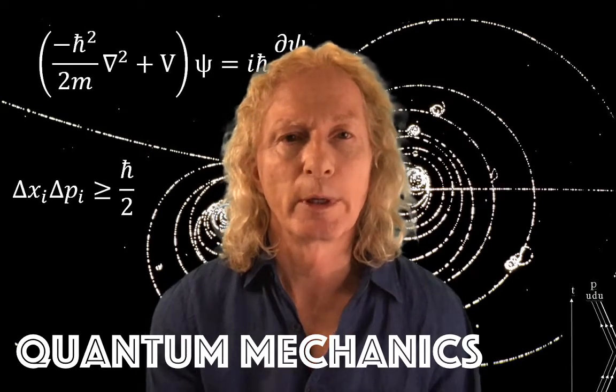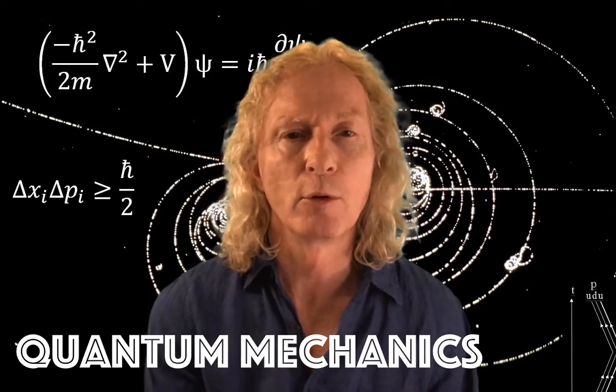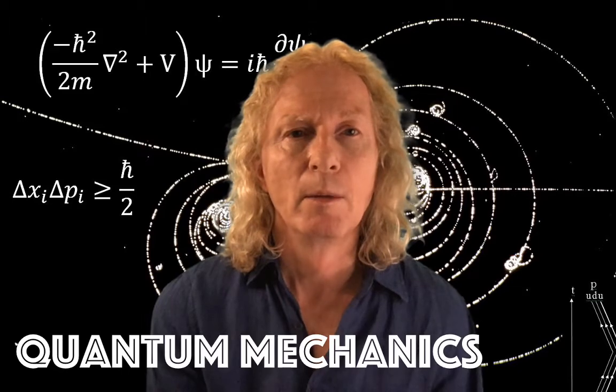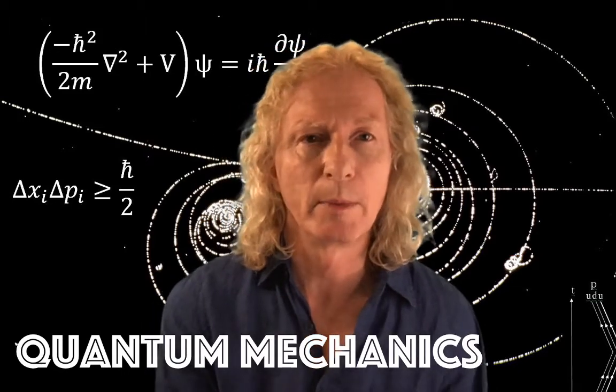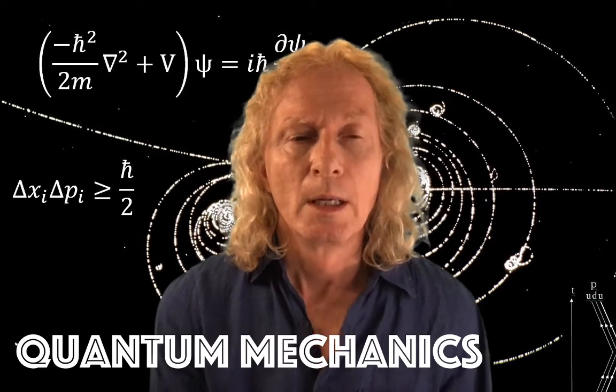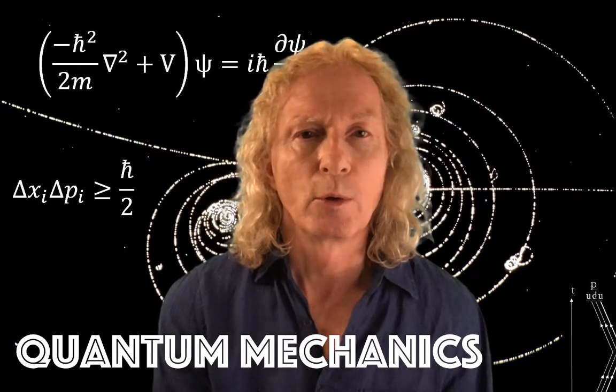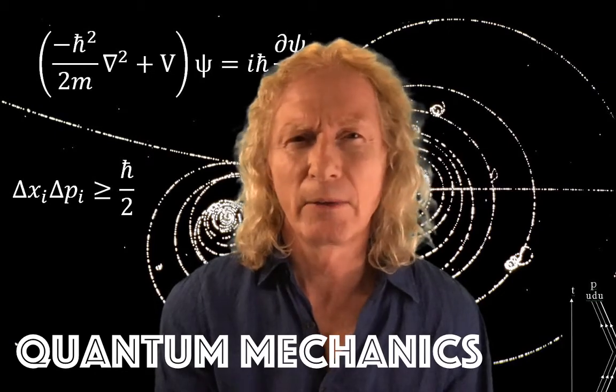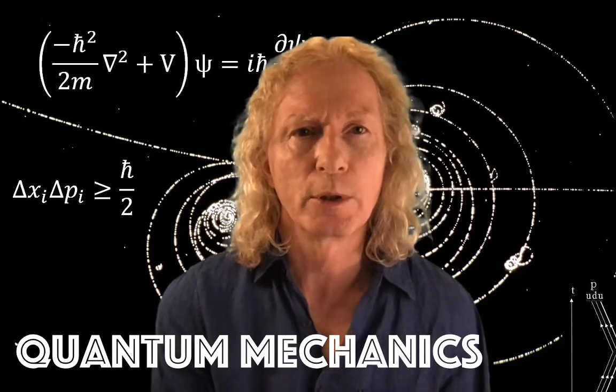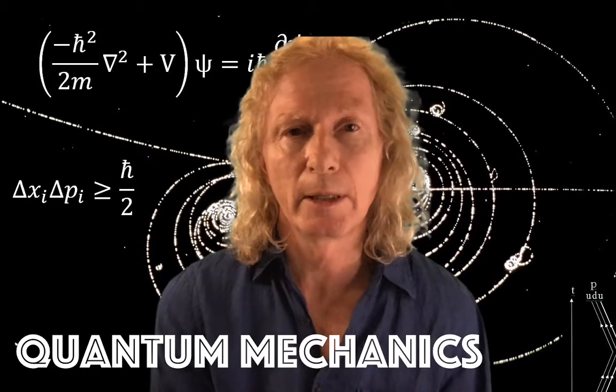Last time we introduced the Schrödinger equation for a single particle of mass m moving under the influence of a potential, and you can see that equation behind me. The solution of that equation gave us a wave function. So how does that wave function describe the motion of a particle quantum mechanically?